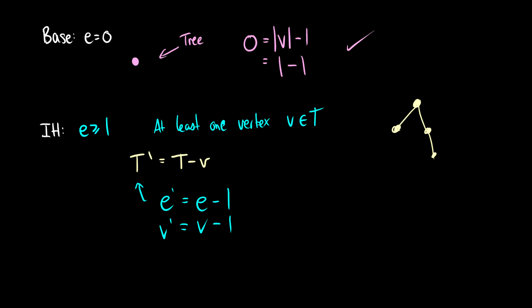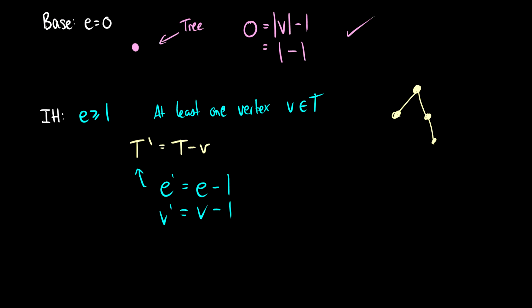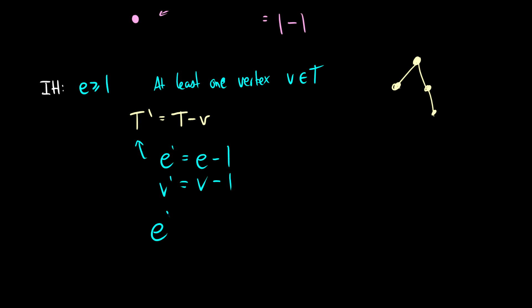So what does this mean? Well, if we take E prime, now we get V prime minus 1. Because the induction hypothesis says that E is equal to V minus 1. So when we substitute in E prime, we get E prime plus 1 is equal to V prime minus 1. So we get E prime plus 1 is equal to V prime. So E prime is equal to V prime minus 1.